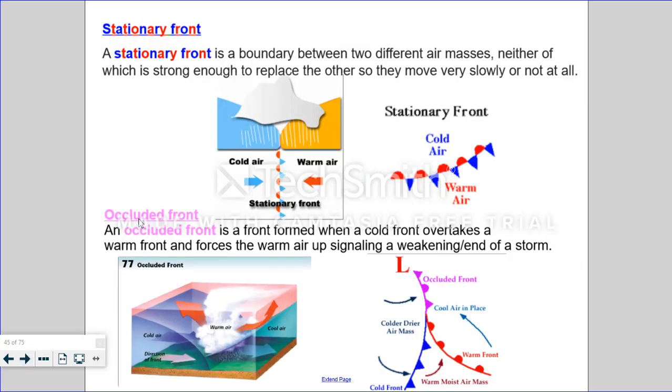A stationary front is a boundary between two different air masses, neither of which is strong enough to replace the other, so they move very slowly or they don't move at all. So this is a stationary front where cold air is meeting warm air, and neither one of them can push the other. And it's depicted by both the red dots and the blue triangles. The warm air is moving in the direction that you see the red dots in, and that's the northwest direction. The cold air is moving in the southeast direction, and those triangles are pointing in that direction.